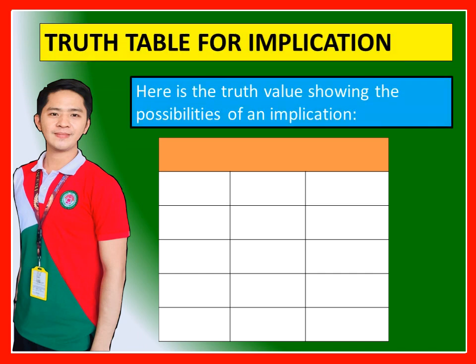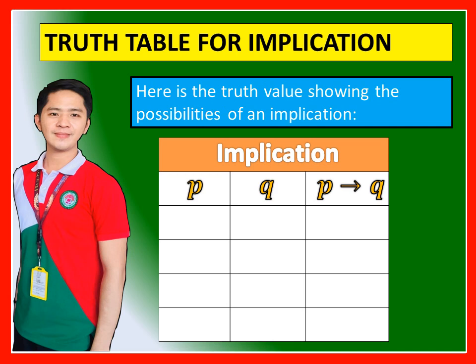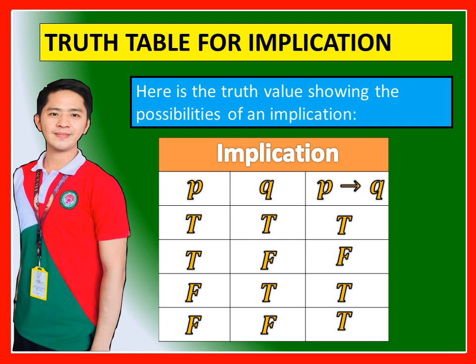Truth table for implication: There are three columns — for P, for Q, and for P then Q. In implication, all possibilities are true except when the hypothesis is true and the conclusion is false — in that case, P then Q is false. So all combinations are true except when the hypothesis is true and the conclusion is false.